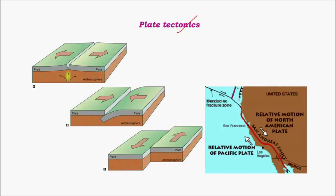Regarding plate tectonics, there are mainly three kinds of plate edges: the constructive or divergent edge, the destructive or convergent edge, and the transform edge. At divergent edges, volcanic activities give rise to mid-oceanic ridges, and there are always earthquakes with shallow focus. At destructive edges, the denser oceanic plate subsides below a lighter continental plate, giving rise to upthrusting of the lighter plate and resultant earthquakes.